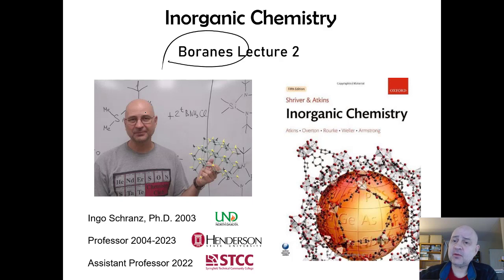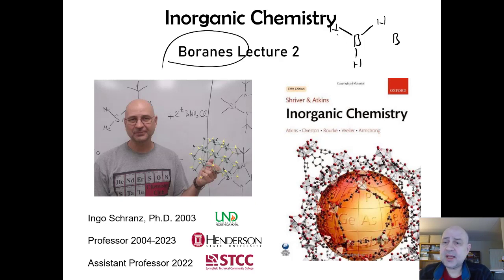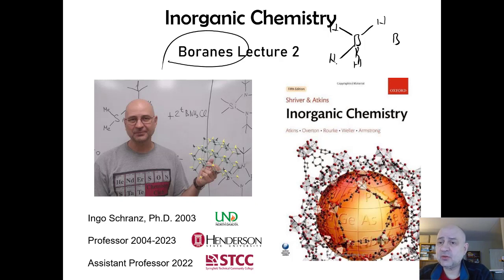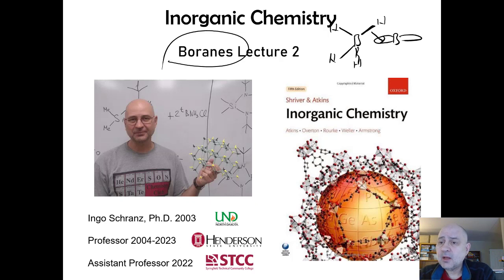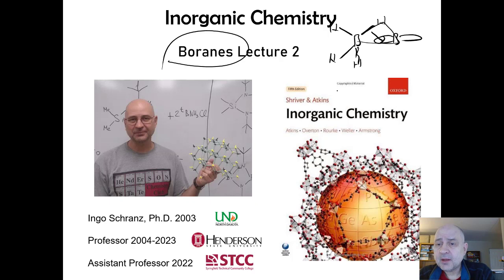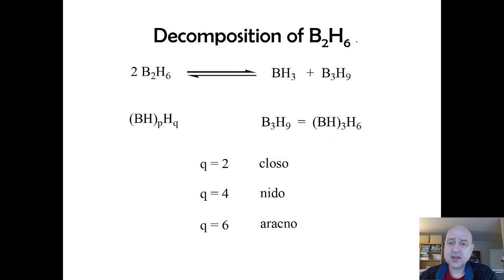What makes these compounds interesting are their three-center two-electron bonds. The simplest borane compound is BH3. It will dimerize, and the way it obtains its octet is by making a three-center two-electron bond — a sigma bond that donates two electrons into an empty orbital. These borane compounds decompose and rearrange to make clusters.